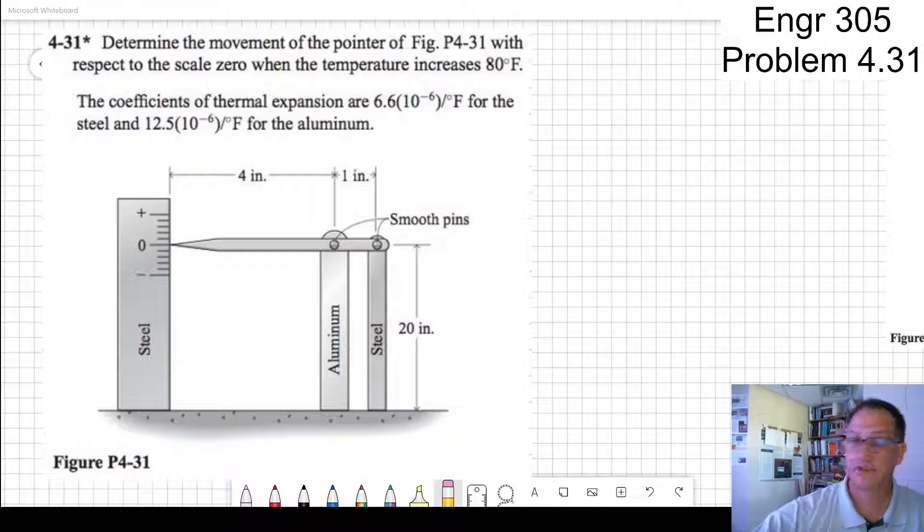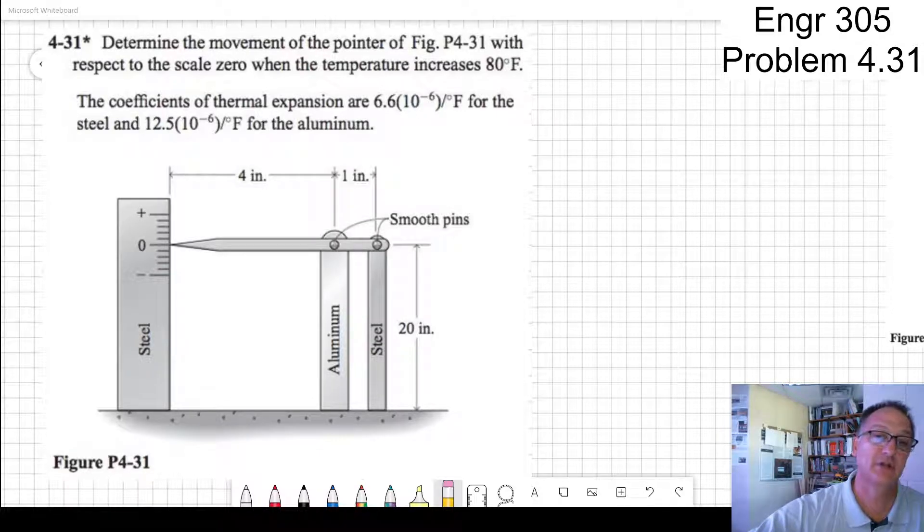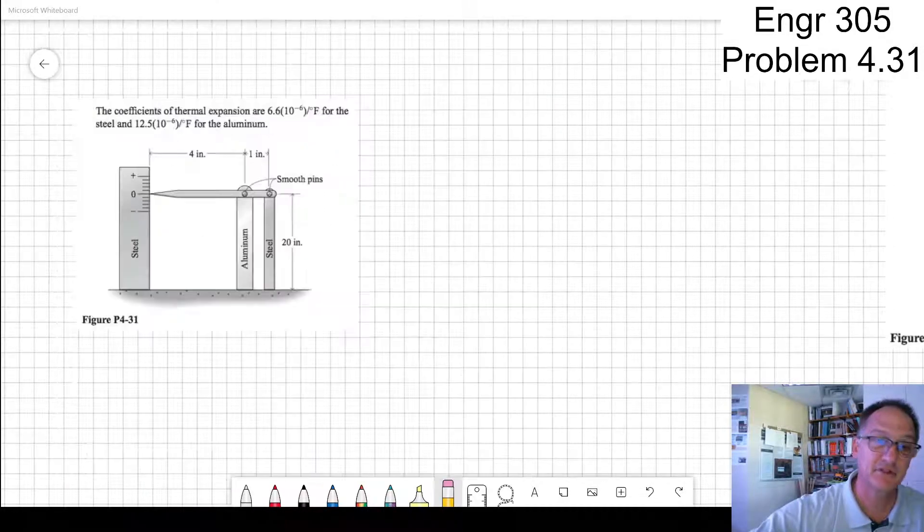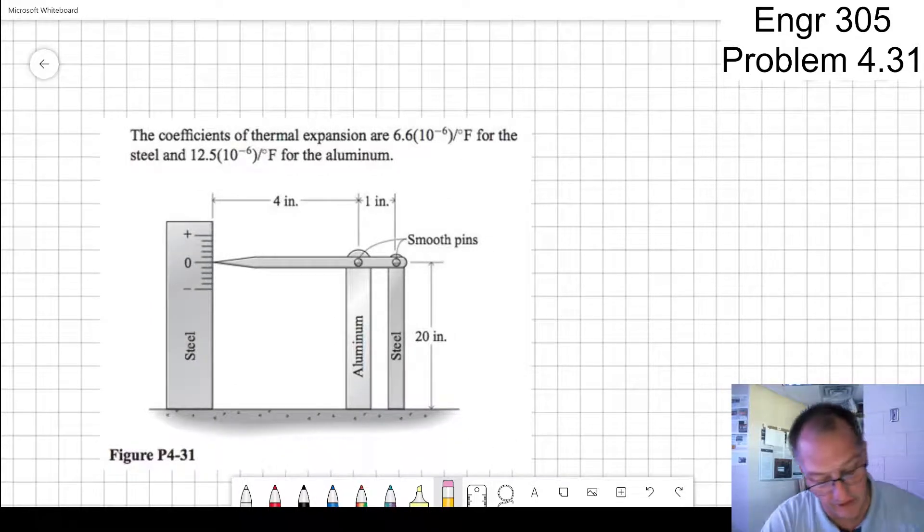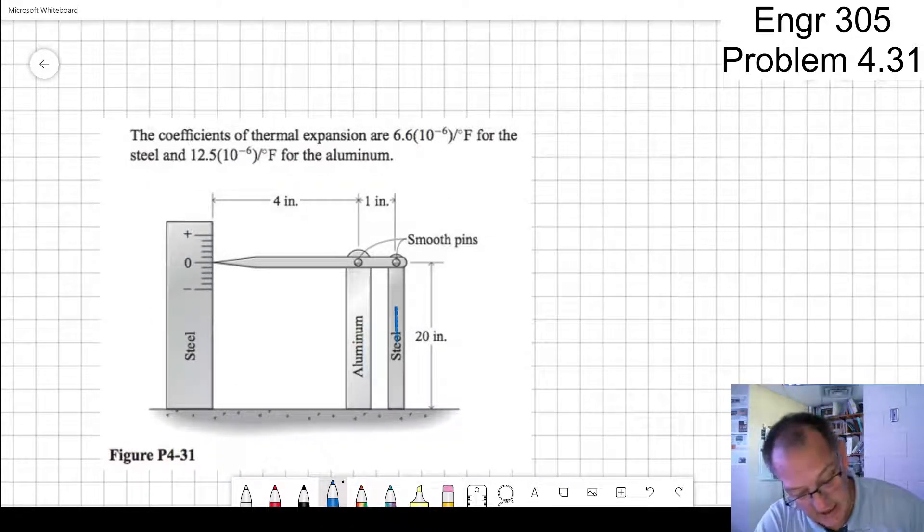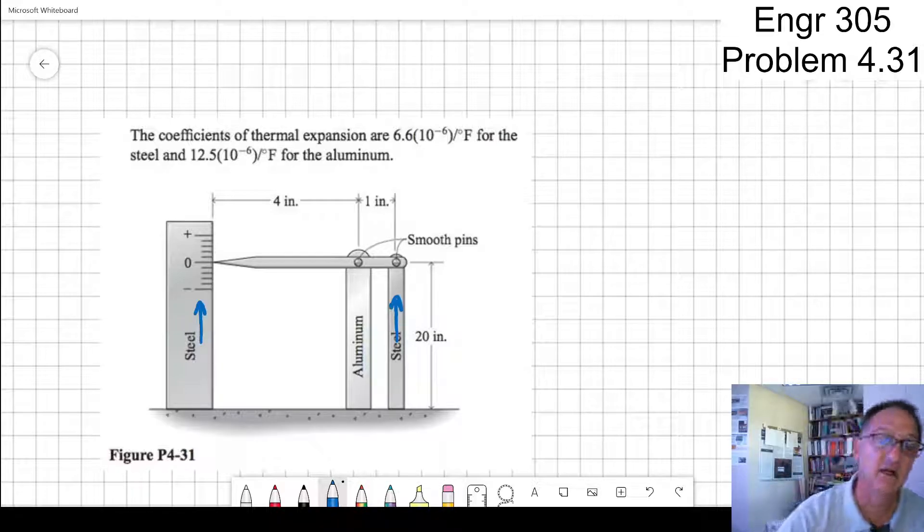The coefficients of thermal expansion are listed for both steel and aluminum. The key for this problem is figuring out how that thing is going to move. As the steel increases in height here, this steel increases in height there. So this pin, relative to this scale, doesn't move.